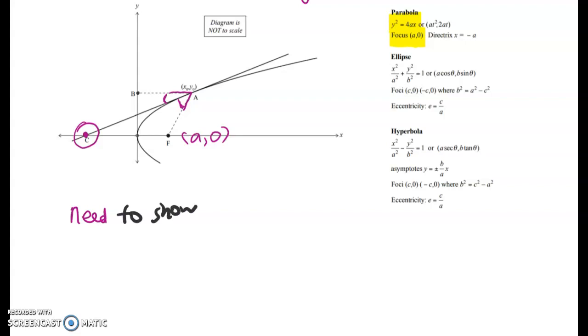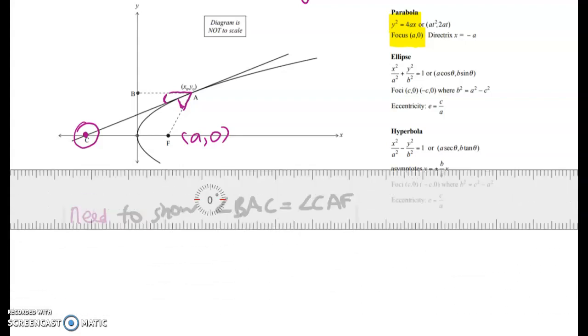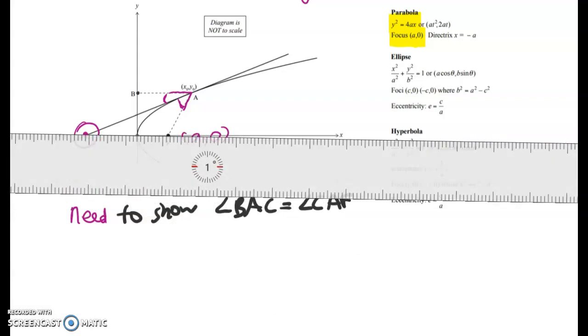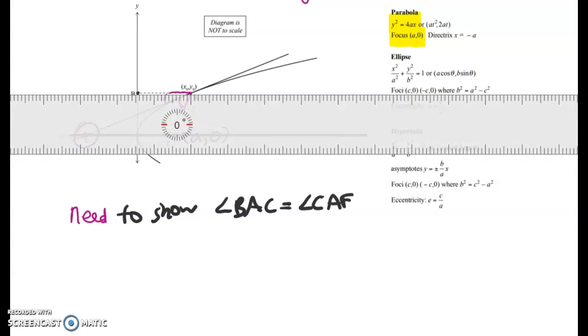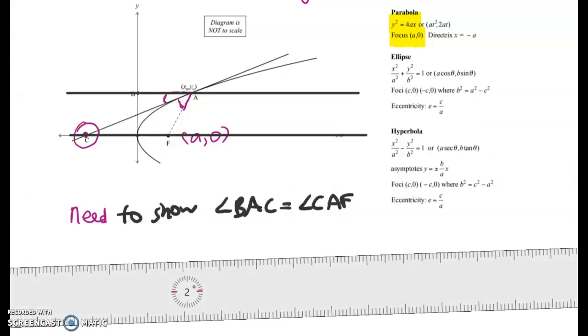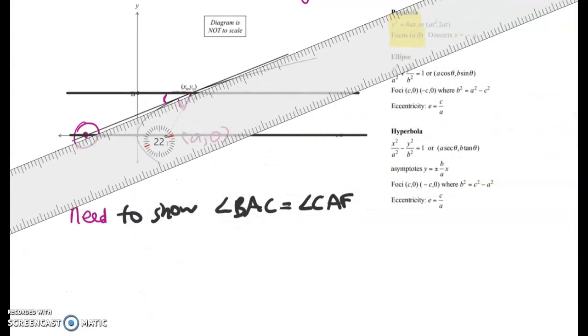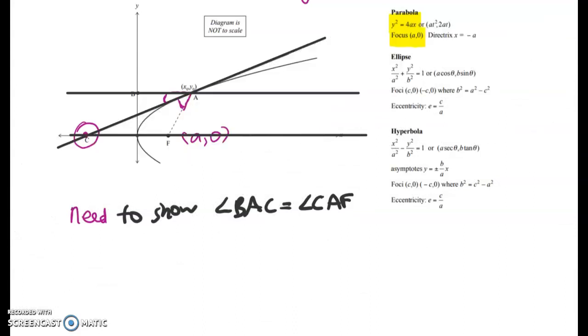So we need to show that angle BAC equals angle CAF. But there's something that's going to help us out a lot, and that's parallel line rules from back in Year 9. So let's draw in some lines and see what can help. Now let's extend out the line through AB. Now we're looking at angles that I've marked on there. We're going to look at that tangent line and now think of it as a transversal through two parallel lines. Once you see this, I think you start to spot what we're trying to show. We want to show that this angle here and this angle here are the same.